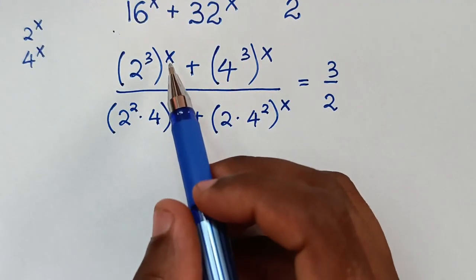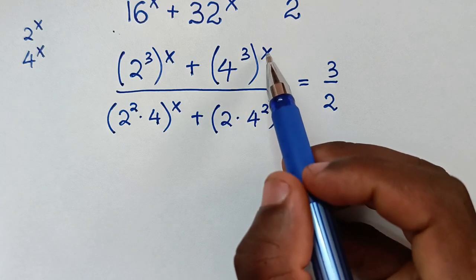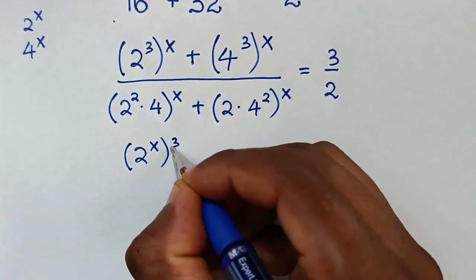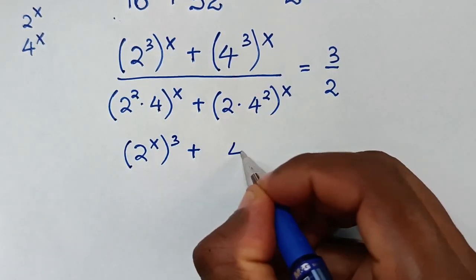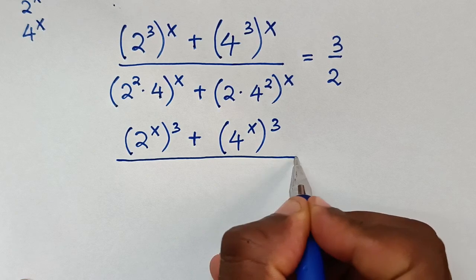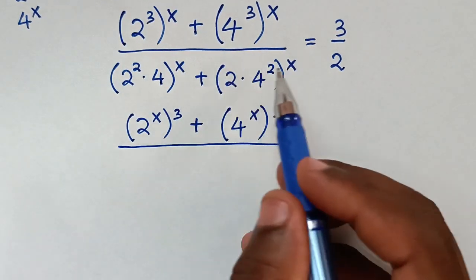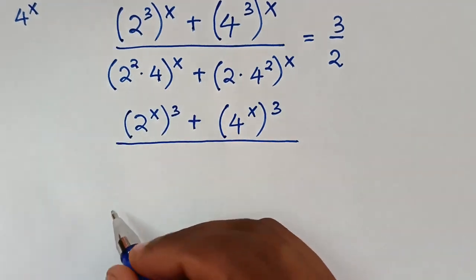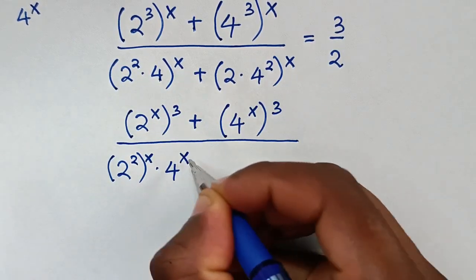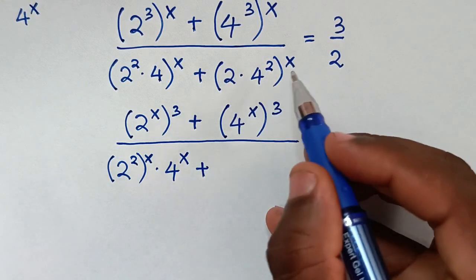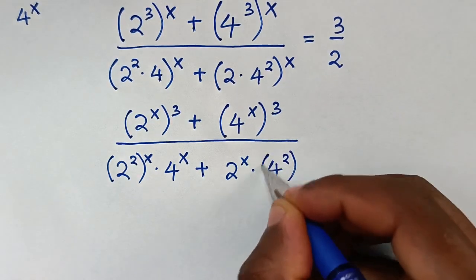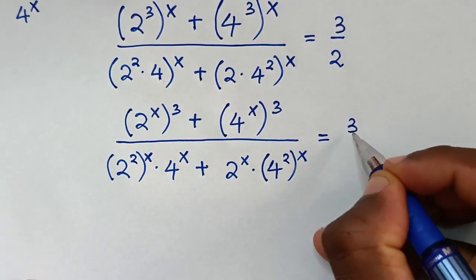In the next step, we take the power of x inside and the power of 3 outside the brackets. So the numerator becomes (2^x)^3 + (4^x)^3, and in the denominator we have 2^x times (4^2)^x, equal to 3/2.